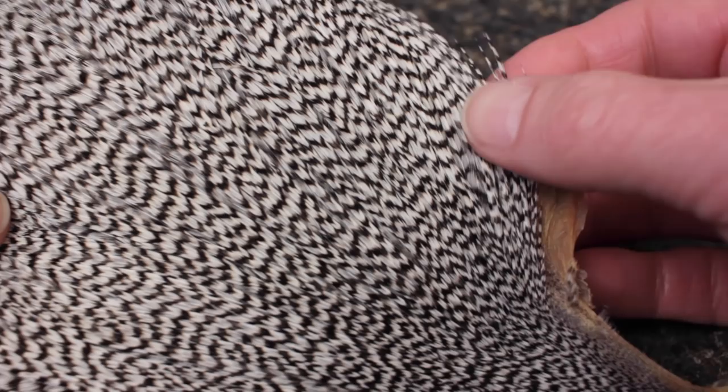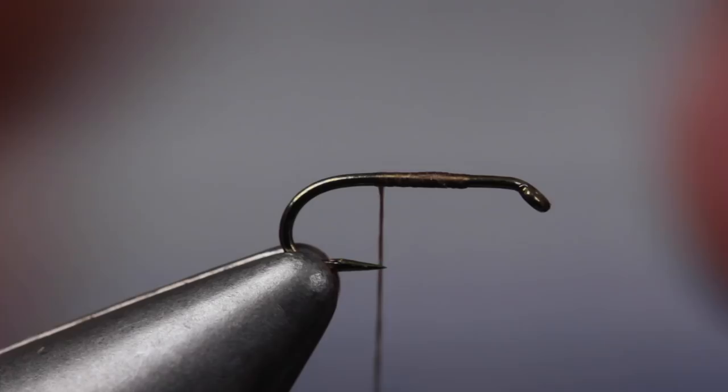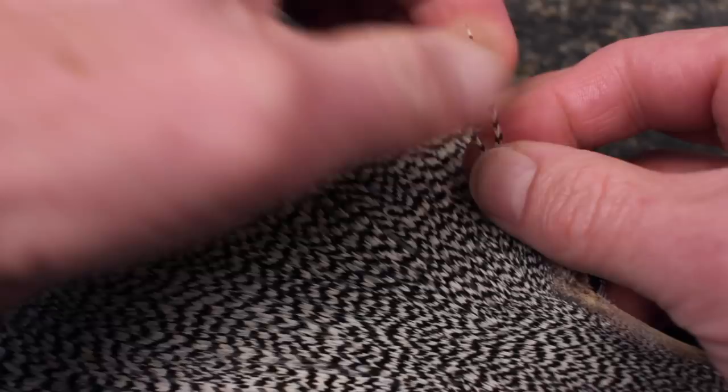From the outside lower edge of a grizzly neck, select a single small hackle with a nice fine point and pull it free from the skin. In this case, there's no sense wasting the better hackles found toward the center of the neck.